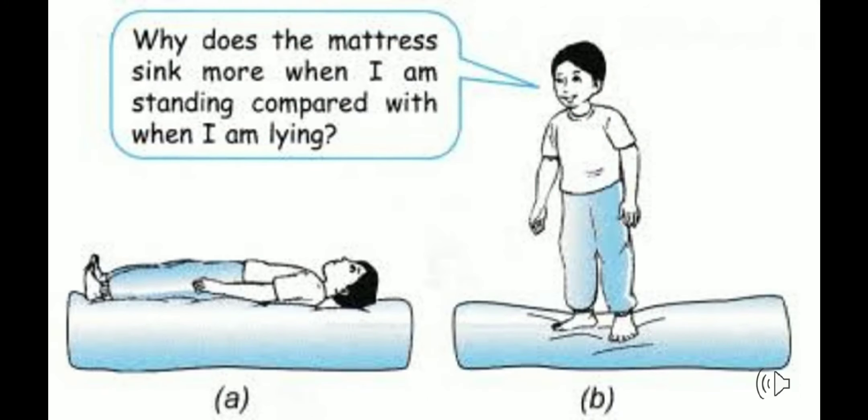Here is another example: when a boy lies down on a mattress he covers more area, so pressure is less and the depression is shallow. When he stands on the mattress he covers less area, pressure is more, and the depression is deeper.